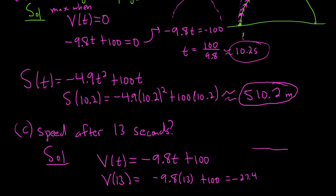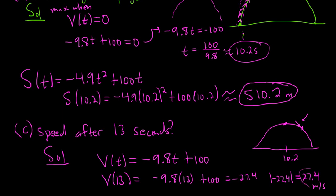That makes sense — the projectile reached its max at 10.2 seconds, so at 13 seconds it's past the peak and coming down, which is why the velocity is negative. Speed is the absolute value of velocity, so the speed is 27.4 meters per second. I hope this video has been helpful — that's it!